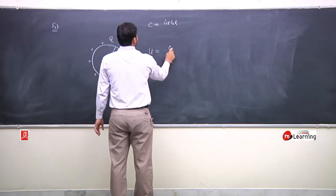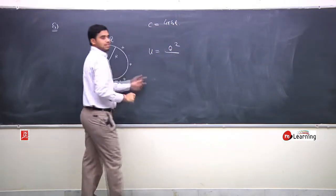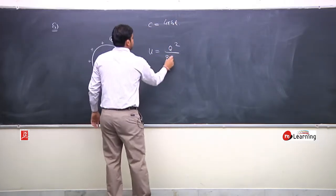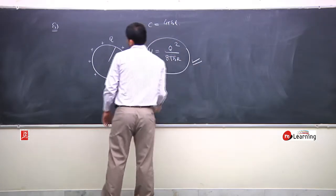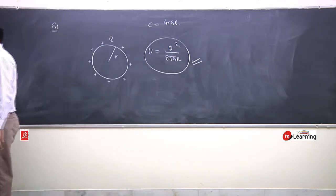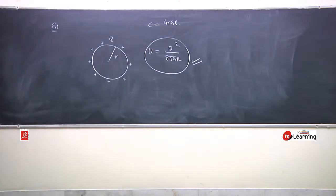So energy stored is Q square by 2C, right? So a charged spherical conductor has this much energy - uniformly charged spherical conductor.